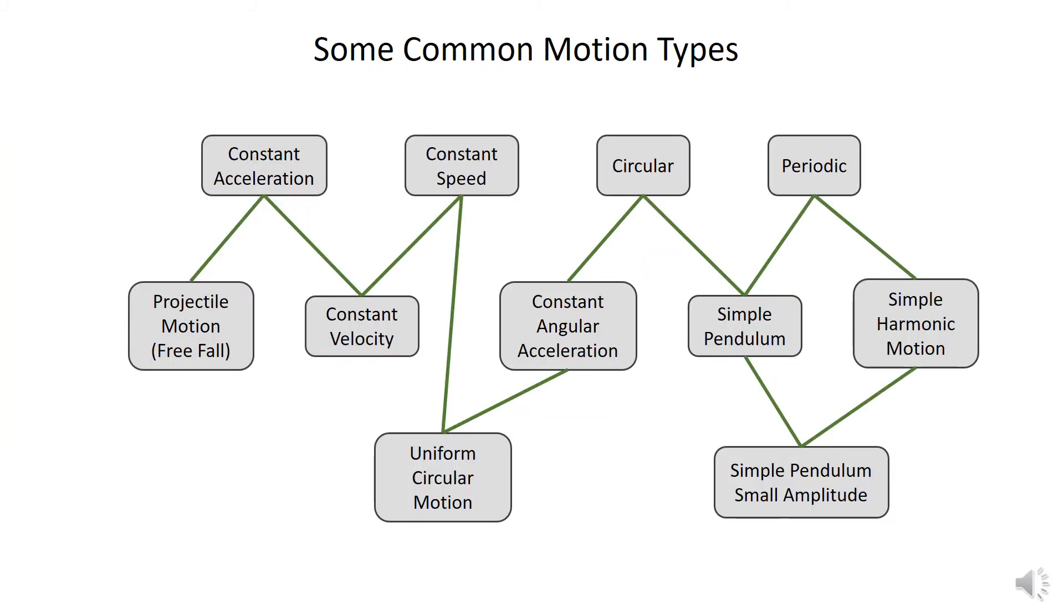Now, after getting used to all the kinematic quantities, we also have that there are certain types of motion that you study that have a lot of formulas that go with them. Motion with a constant acceleration, circular motion, periodic motion. And I laid these out in terms of how they're related. For example, the simple pendulum is periodic. It's also circular. Motion with a constant velocity is a subset of motion with a constant acceleration. It's also an example of motion with a constant speed.